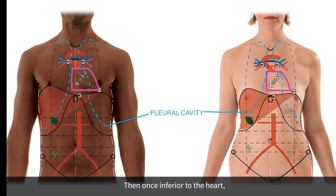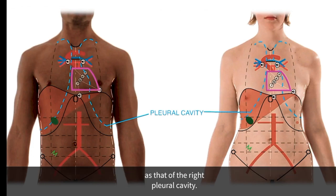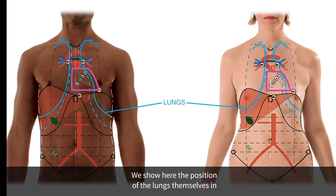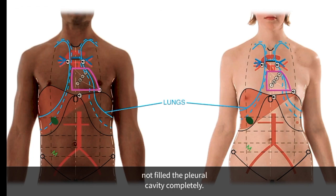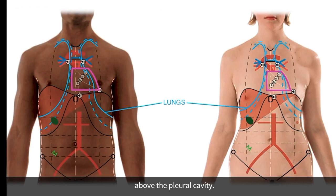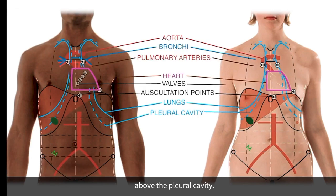Once inferior to the heart, the left pleural cavity follows the same trajectory as that of the right. We show here the position of the lungs themselves in quiet inspiration, where they have not filled the pleural cavity completely, and we note that they are a rib or two above the pleural cavity.